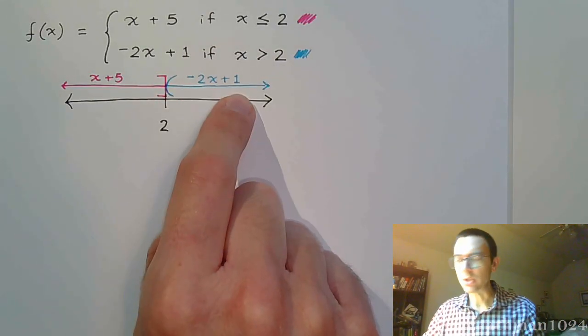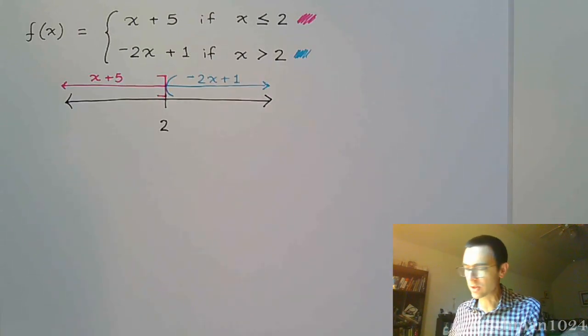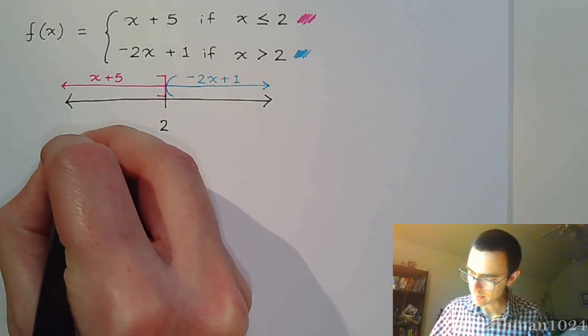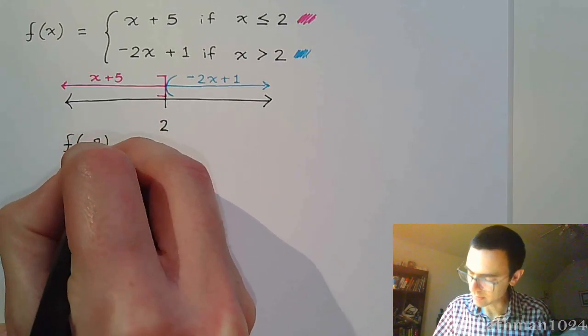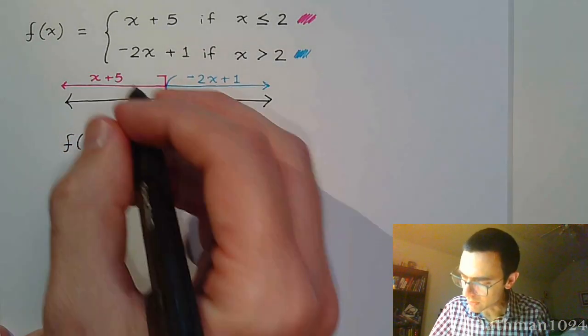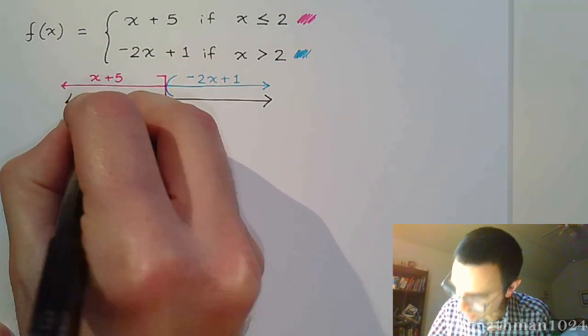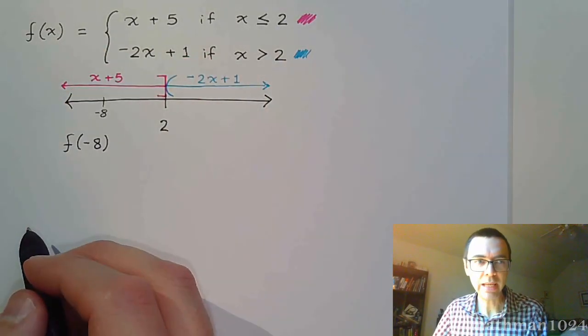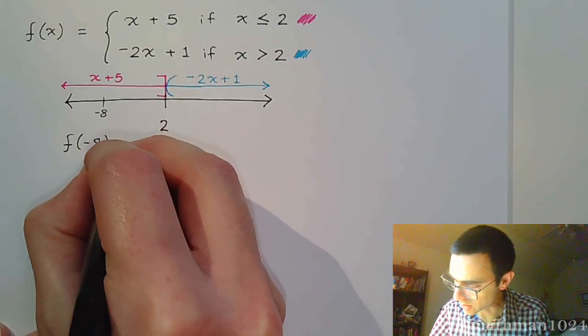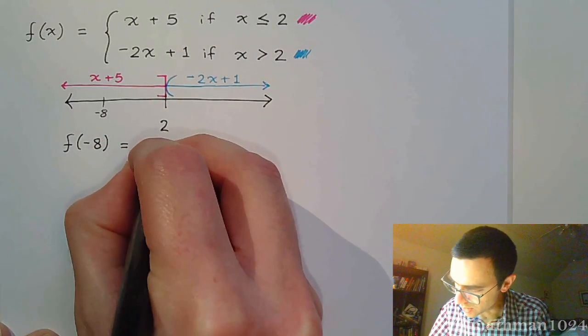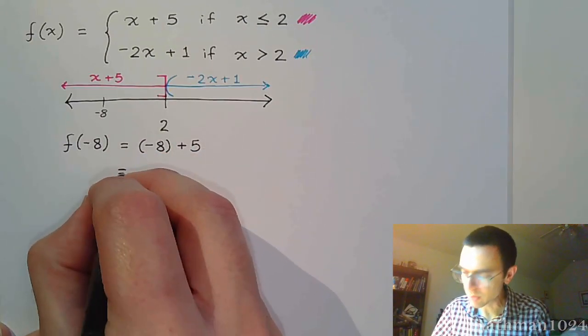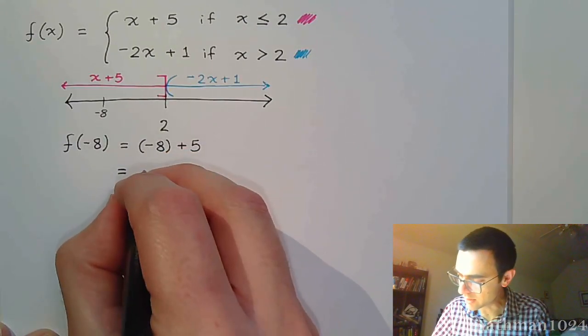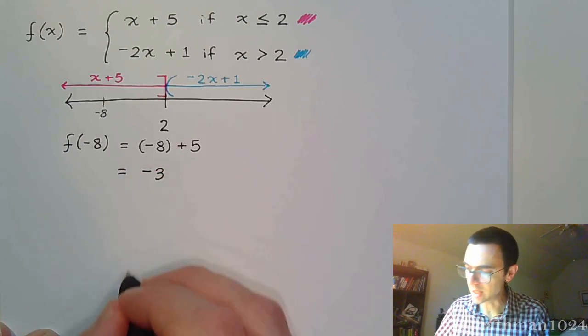So if I ask you to evaluate f(-8), okay, -8 falls over here on the number line, and so it falls under the pink part of this piecewise-defined function. So we would do -8 + 5, and then just work this out. -8 + 5 is -3.